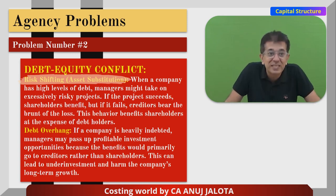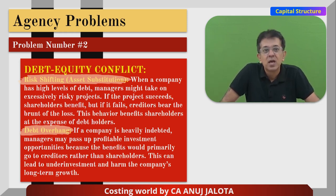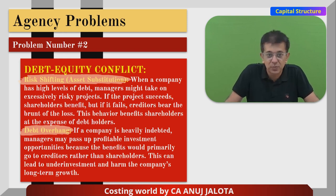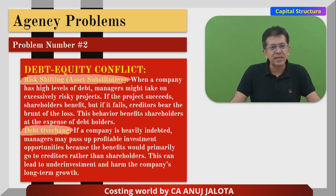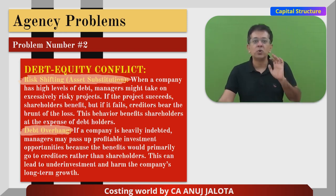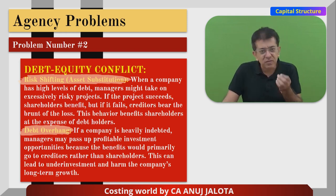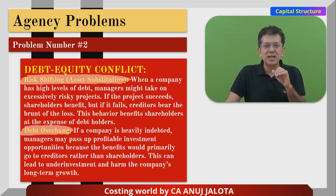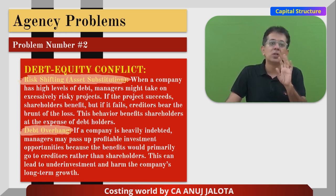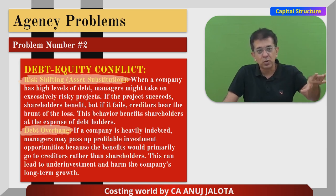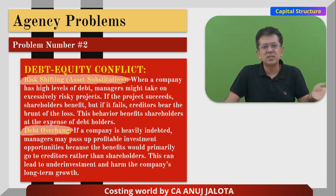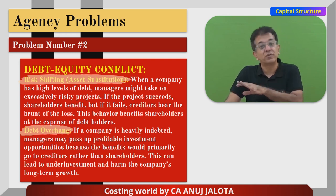There is also debt overhang. If a company is heavily indebted, managers might pass over profitable investment opportunities because the benefit would primarily go to the creditors rather than the shareholders. This can lead to underinvestment and harm the company's long-term growth. Managers think: the company already has so much debt, so let's not take on these projects — essentially shielding the creditors (debenture holders) but hurting growth.